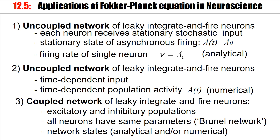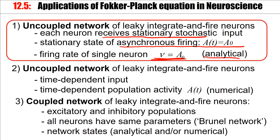With this in mind, let us look at a couple of applications of this formalism. We'll start with uncoupled networks — an uncoupled network of leaky integrate-and-fire neurons where each neuron receives stationary stochastic input. We make the assumption that this leads to stationary asynchronous firing, so that the population activity is constant, and therefore the individual neuron firing rate equals the population activity. This will yield an analytical result. Thereafter, we'll also look at time-dependent input and coupled networks.